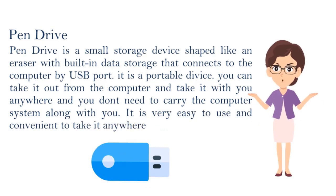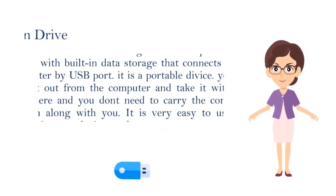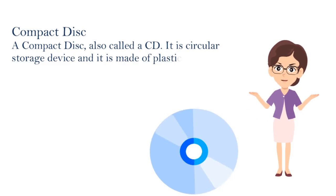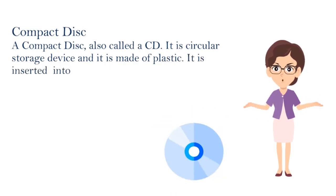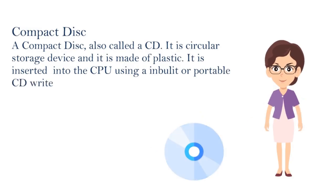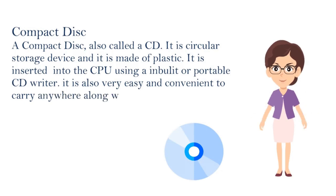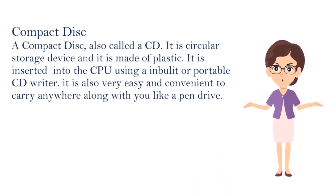Number seven: Compact Disc, that is a CD. A CD is a circular storage device and it is made of plastic. It is inserted into the CPU using the built-in or portable CD writer. It is also very easy and convenient to carry anywhere along with you, like a pen drive.